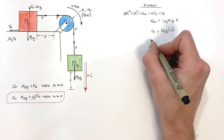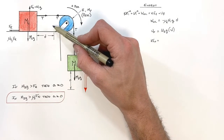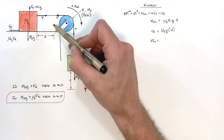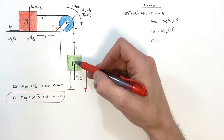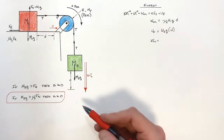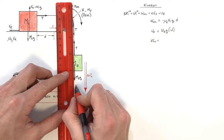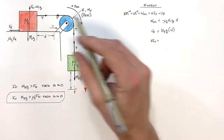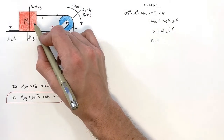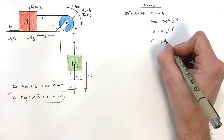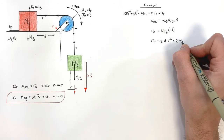Now for final kinetic energy: the horizontal block is dragged to the right, accelerating at rate a over distance d, so by the time it has traveled distance d it's moving at some velocity v. The hanging block accelerates downward at the same rate a, so by the time it has moved down distance d it's also traveling at velocity v. The kinetic energy of the horizontal block is ½m₁v², and the kinetic energy of the hanging block is ½m₂v².